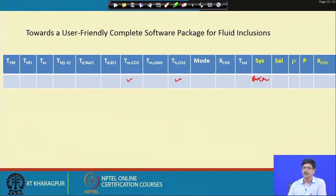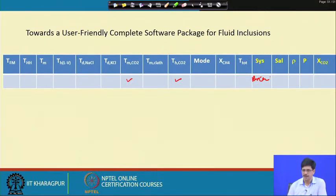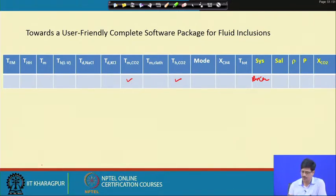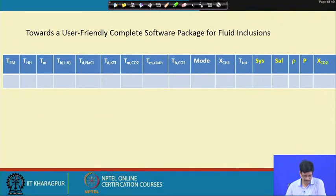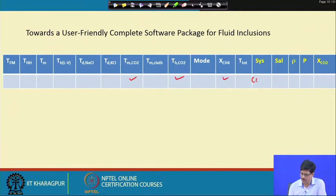The fluid inclusionist is always in a quandary about which equation to use if not very familiar with recent developments in PVTX relationships. This approach takes away that uncertainty — the system is chosen and the most appropriate equation for volumetric calculation is decided automatically. Similarly, if TM CO₂, TH CO₂, and XCH₄ are the three columns filled, the system is identified as CO₂-CH₄. This logic, while not an exhaustive list, serves as a demonstration of the principle.